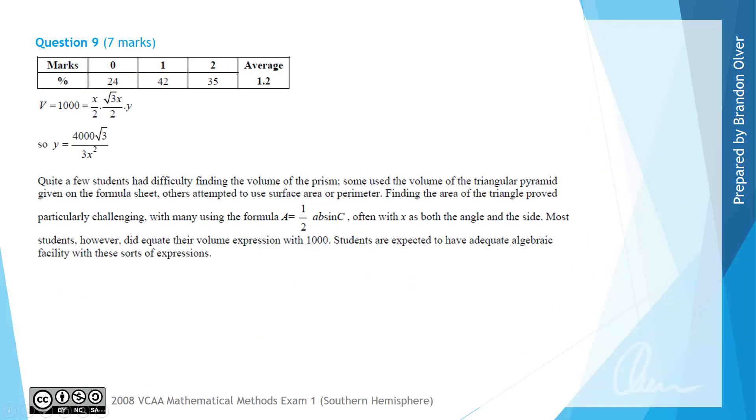The examiner's report indicates that 35% of students were able to successfully attempt this problem with 42% making some progress. A lot of students had difficulty finding the volume of a prism and some used the volume for a triangular pyramid which was given on the formula sheet instead. Others mistakenly used surface area or perimeter formulas. Finding the area of the triangle proved to be a challenge, with many using the formula A equals half ab sine c, often with x as both the angle and the side. If you had to use that formula, the angle would have needed to be 60 degrees.